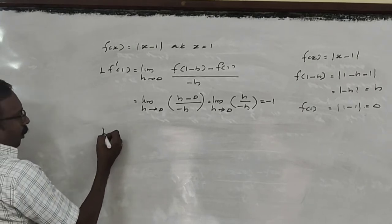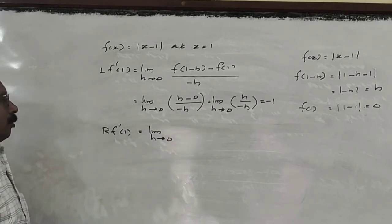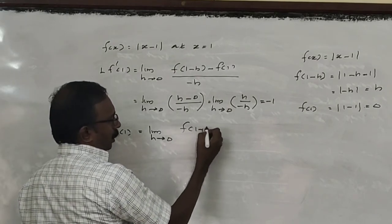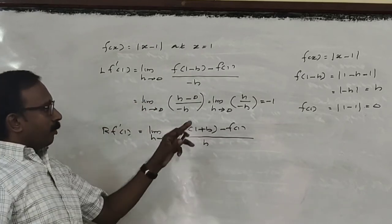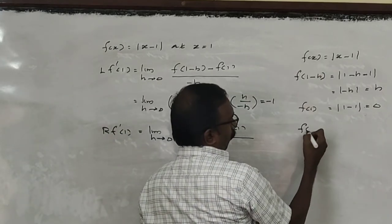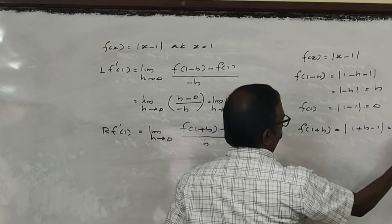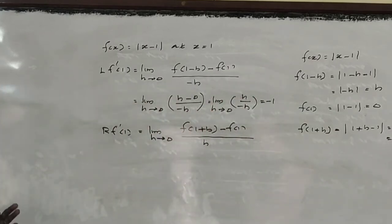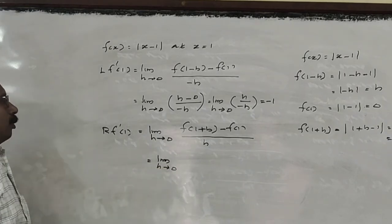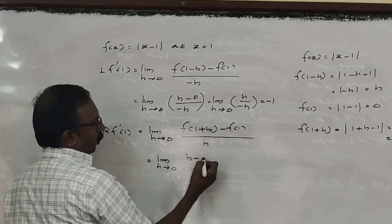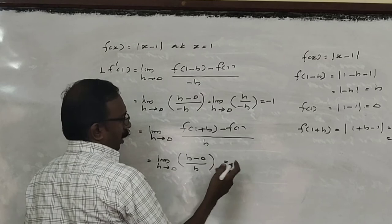Similarly, we find R of f'(x) at x=1: limit as h tends to 0 of f(1 plus h) minus f(1), divided by h. Here f(1 plus h) = |1 plus h minus 1| = modulus of h = h itself. Therefore the limit as h tends to 0 of h minus 0, divided by h. That is h by h, which equals 1. So R of f'(1) equals 1.